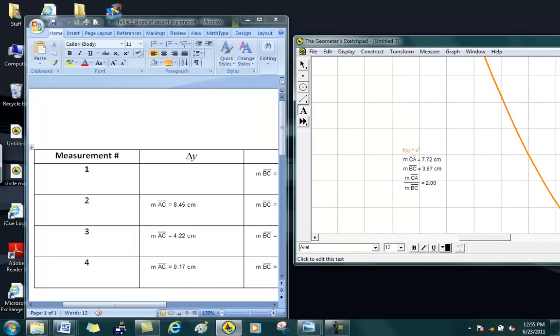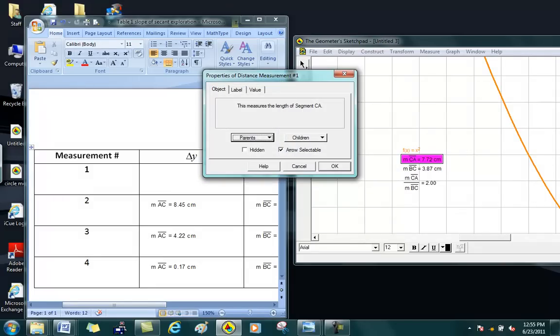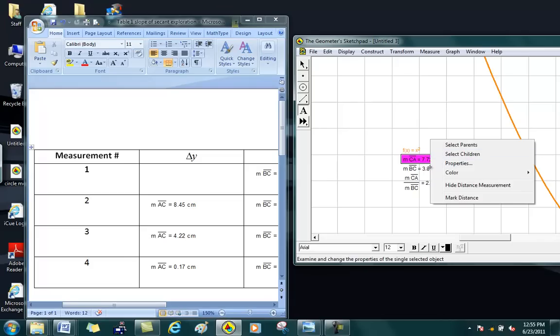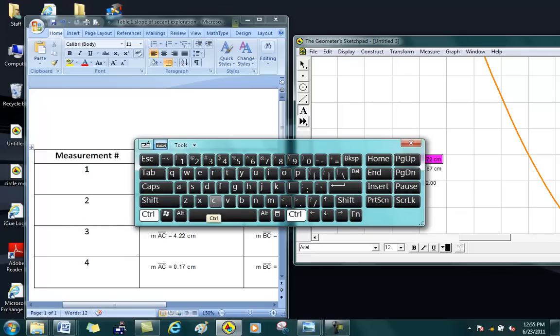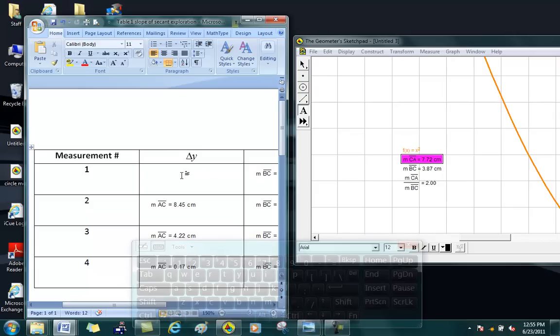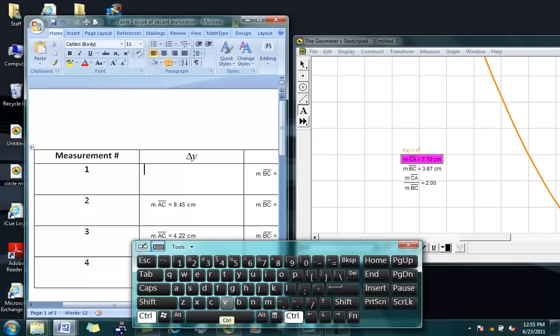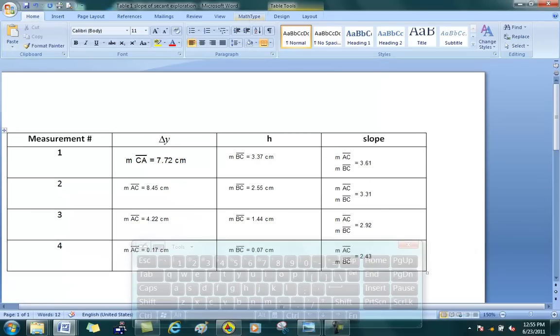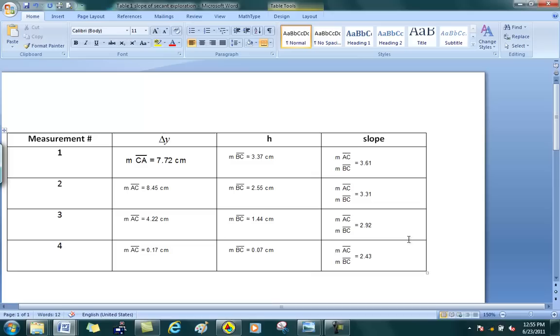So I'm going to take this highlighted, copied. Should be able to do a control c. I'm trying to do control c. Come back in here and do a control v. That measurement should be inserted in there automatically. So you don't have to type any of these things in the table. You should be able to cut things out of your Sketchpad document and insert it in this table.